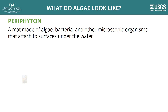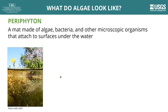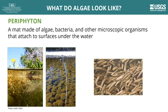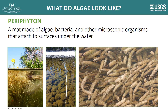Instead of floating in the water, other microscopic algae can grow attached to surfaces such as plants and rocks beneath the water. Periphyton is a mat made of algae, bacteria, and other microscopic organisms. Although the individual algae are microscopic, periphyton can be seen as floating mats or growing on plants.